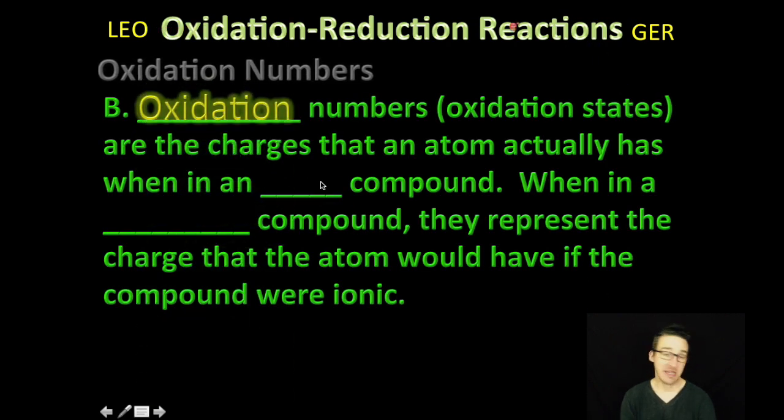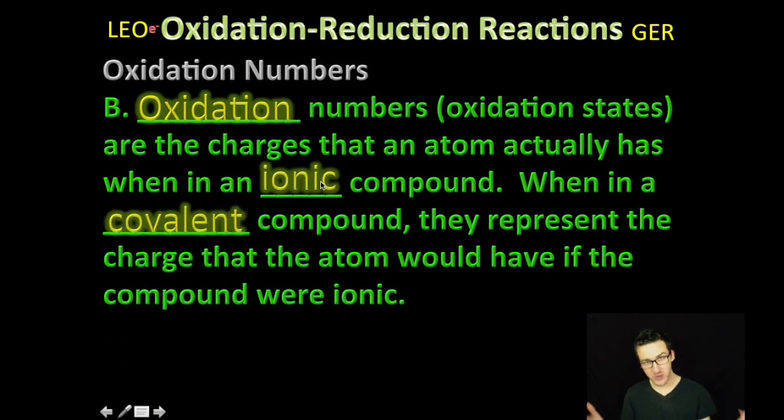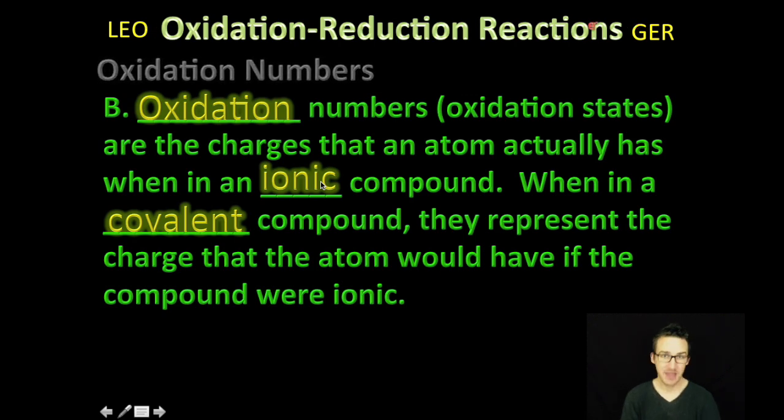Okay, so as we study oxidation-reduction reactions, or redox reactions, we need to keep in mind something called oxidation numbers, also called oxidation states. They mean the same thing. But these are numbers that we are going to assign to atoms or ions. And in an ionic compound, those oxidation numbers are the charges that the atom actually has, or the ion actually has, in an ionic compound. It's a little trickier when it's in a covalent compound, but basically they just again represent the charge that the atom would have if the compound were ionic.